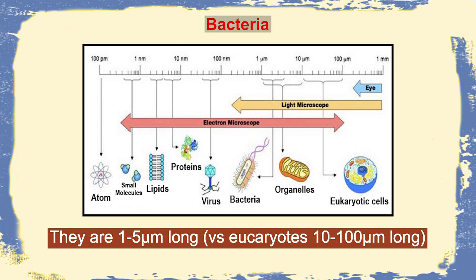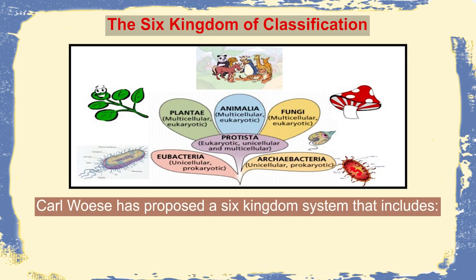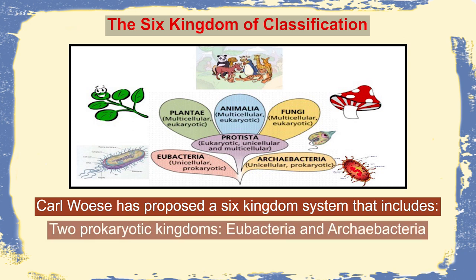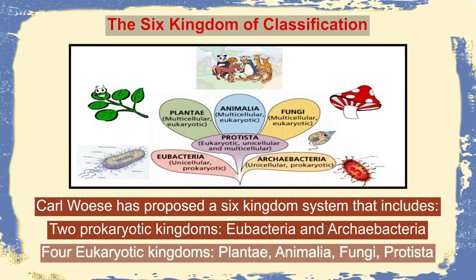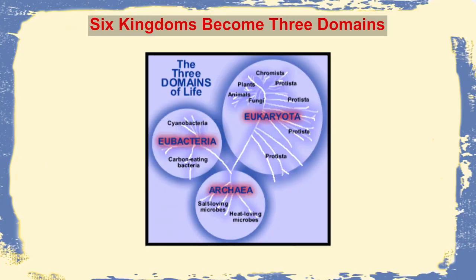By comparison, eukaryotes are almost 10 to 100 micrometers long. The six-kingdom classification system proposed by Carl Woese includes two prokaryotic kingdoms — eubacteria and archaebacteria — and four eukaryotic kingdoms: Plantae, Animalia, Fungi, and Protista. These six kingdoms were then narrowed down into three domains of life: eubacteria, archaebacteria, and Eukarya.